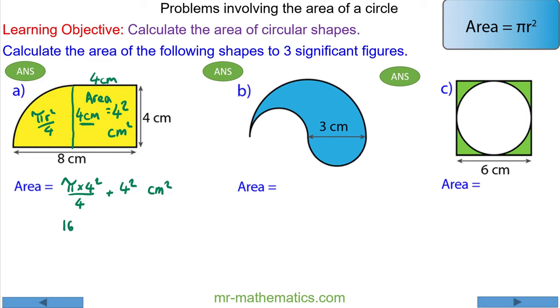So we have 16 pi, which is 4 squared pi, divided by 4 plus the area of the square. And we can simplify 16 pi over 4 to make 4 pi plus 16 centimeters squared. So this is the area in terms of pi, or as a decimal it is 28.6 to 3 significant figures.